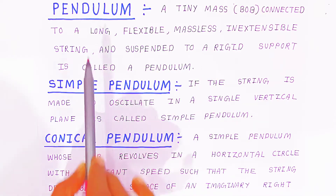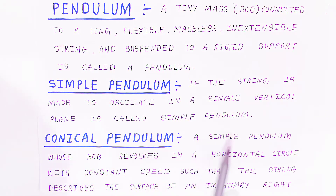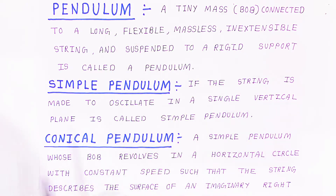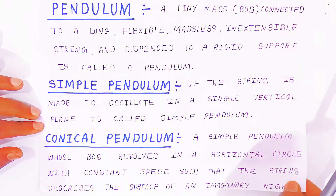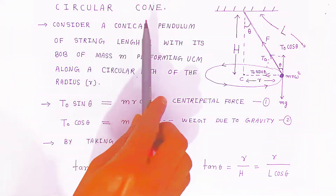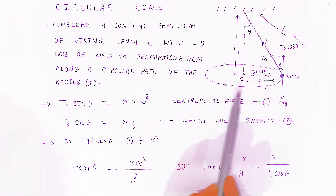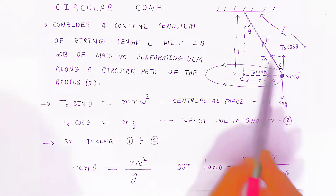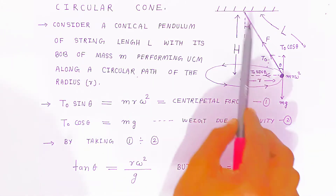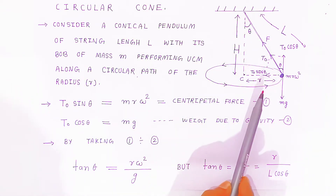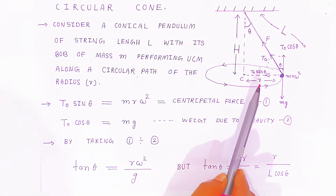When is a pendulum called a conical pendulum? When a simple pendulum's bob revolves in a horizontal circle such that the string describes the surface of an imaginary right circular cone, it is called a conical pendulum. As shown in the diagram, the bob revolves in this manner.